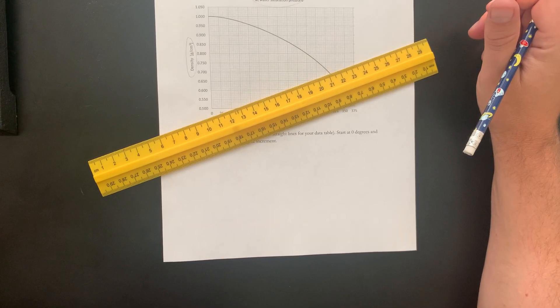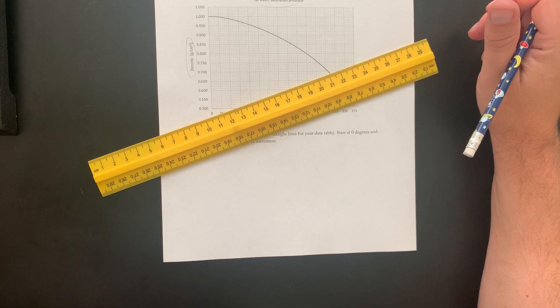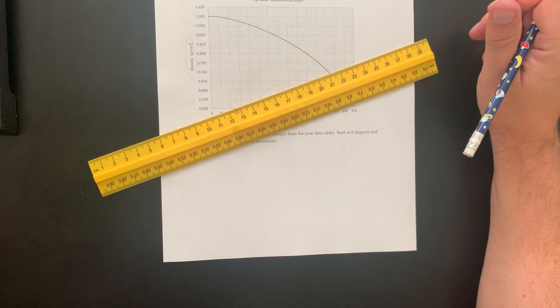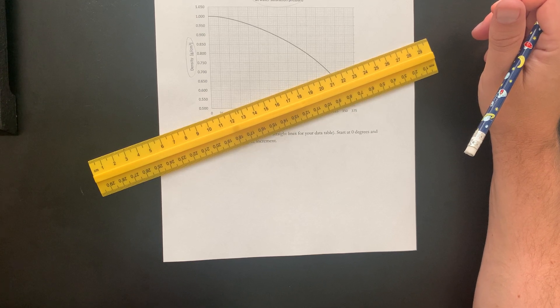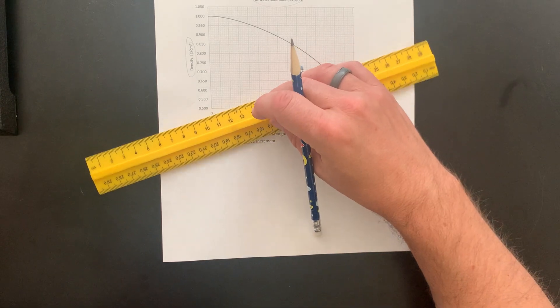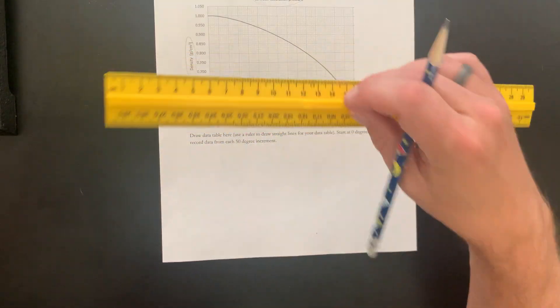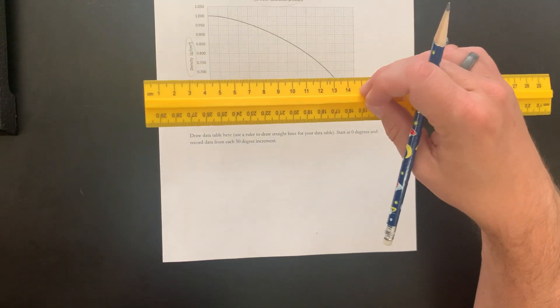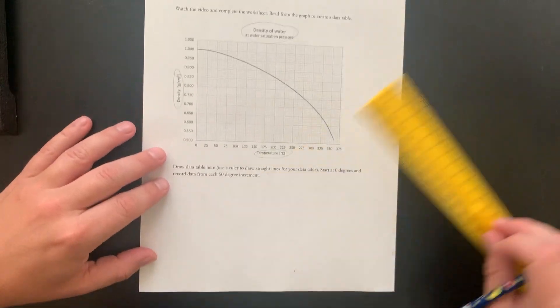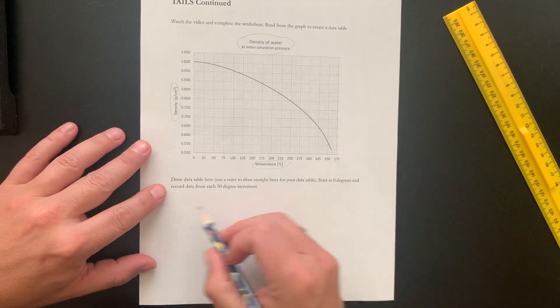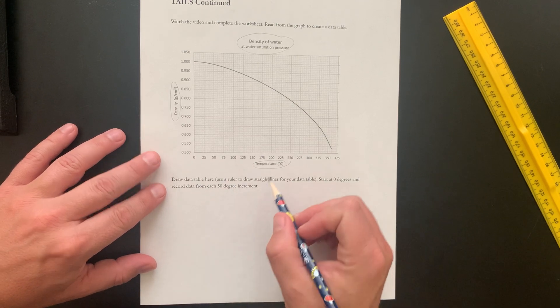You can also do this on the computer. So you could type all this into Microsoft Excel or Google Spreadsheets and just print that up. And that would be fine too, if you don't want to try and draw the data table using the ruler. So it says, start at zero degrees and record data from each 50 degree increment.